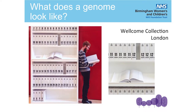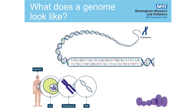It helps to start thinking about what a genome actually looks like. If you want to see a genome, you can go down to the Wellcome Collection just opposite Euston Station in London and actually have a look at the human genome — all six billion letters printed out in a volume of over 100 books. The genome is comprised of just four different letters: A, C, G and T, which are the four nucleotides that make up our DNA.